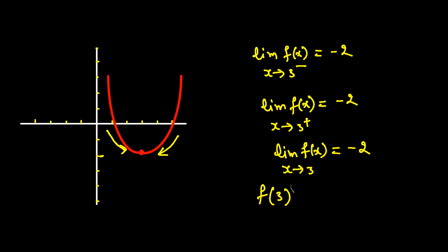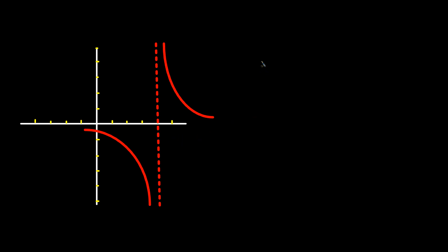So the value of the function at x=3 is equal to negative 2. Now let's do one more example.